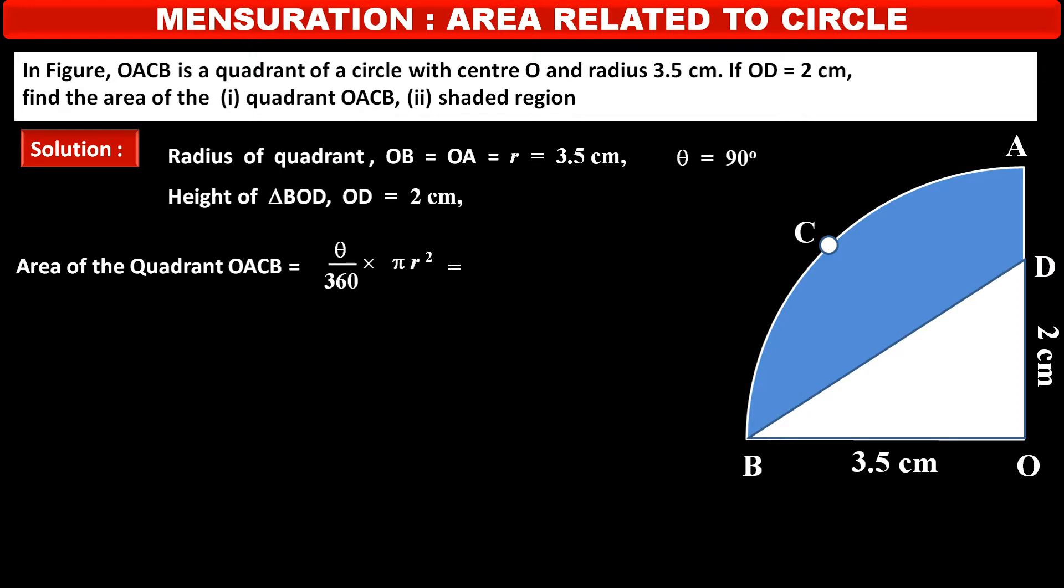Value of theta 90 upon 360 into value of pi 22 upon 7 into R square that is 3.5 square. After calculation, it is 9.625 cm square. This is the area of quadrant OACB.